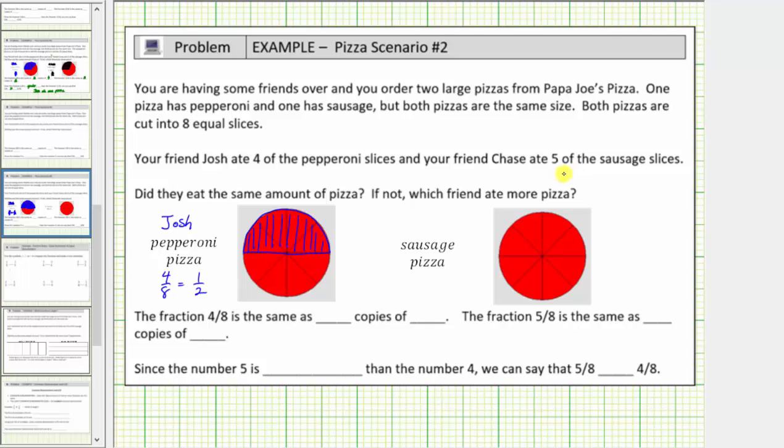Next, Chase ate five of the sausage slices. Let's just assume Chase ate these five slices. Notice Chase ate five-eighths of the pizza.